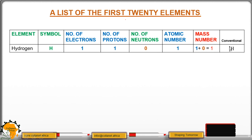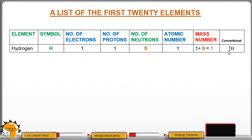Conventionally, you write 1 here as the mass number, and down here we write the atomic number.